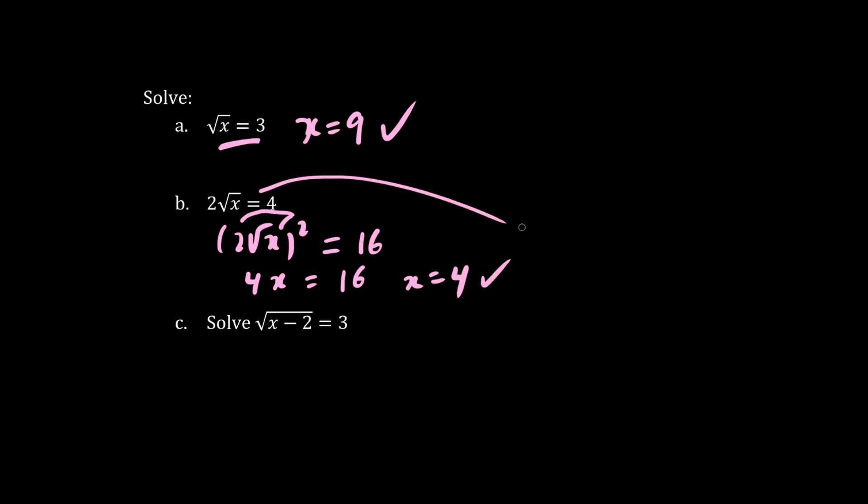Another way of doing this problem is to divide both sides by 2. So we have root x equals 4 divided by 2 is 2. We then square both sides, x equals 4.